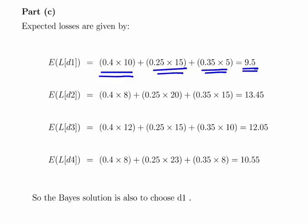So essentially what we do is go through the table and calculate the expected losses according to the probabilities. For the first case theta 1 the probability is 0.4 and the loss is 10. For theta 2 the probability is 0.25 and the loss is 15. And 0.35 times 5. So add them all up and we get 9.5.